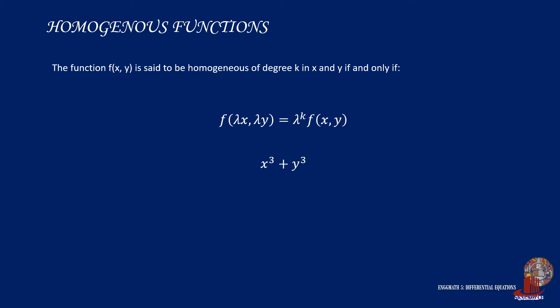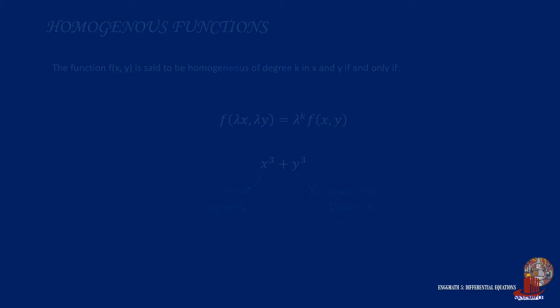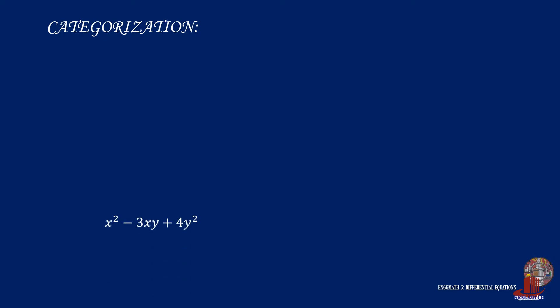Take x³ + y³. From the definition, we can say that there are two terms, of which the first term is in its third degree, which is similar to the second term, so we can say that this function is homogeneous. For x² + 3xy + 4y², the first term has a second degree, the middle term has x and y making a degree of 2, and the third term y² is in the second degree.